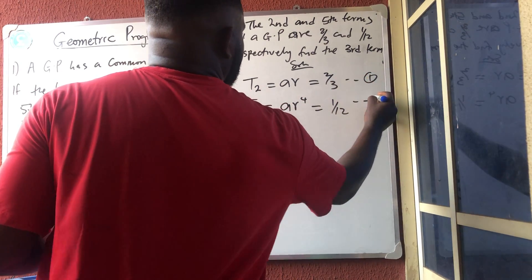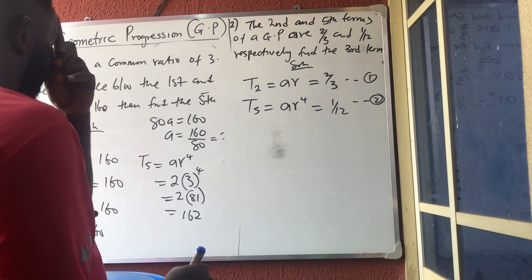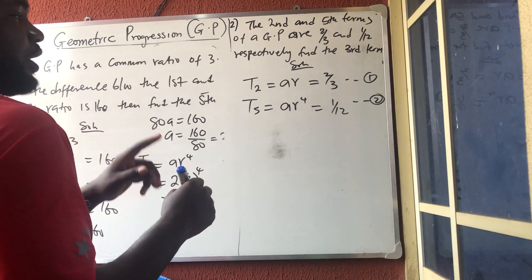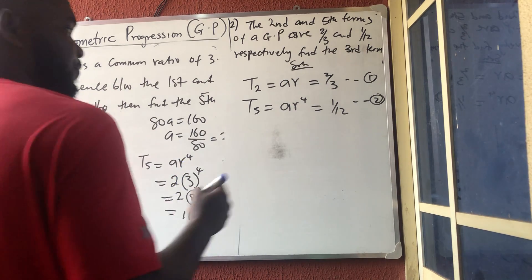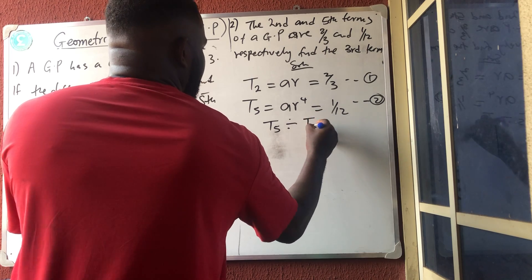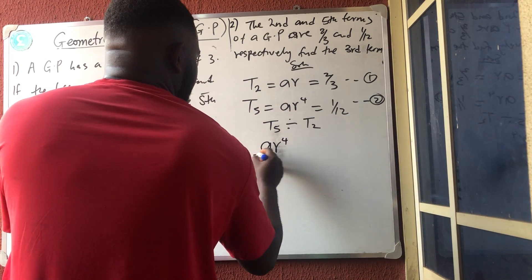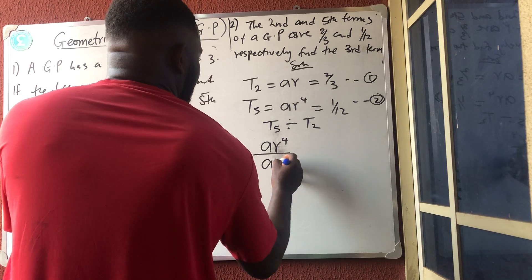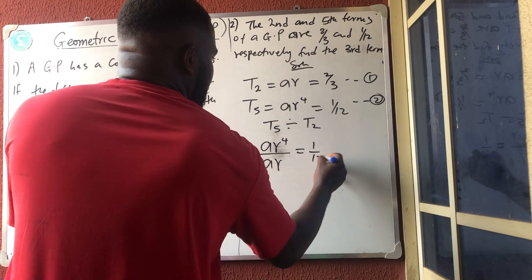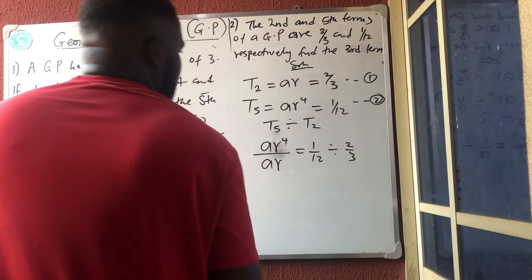Unlike arithmetic progression where we subtract, in geometric progression when you have two equations like this, you divide. So divide T5 by T2: (A × R^4) / (A × R) = (1/12) / (2/3). The A's cancel, giving R^3 = 1/12 × 3/2 = 3/24 = 1/8.